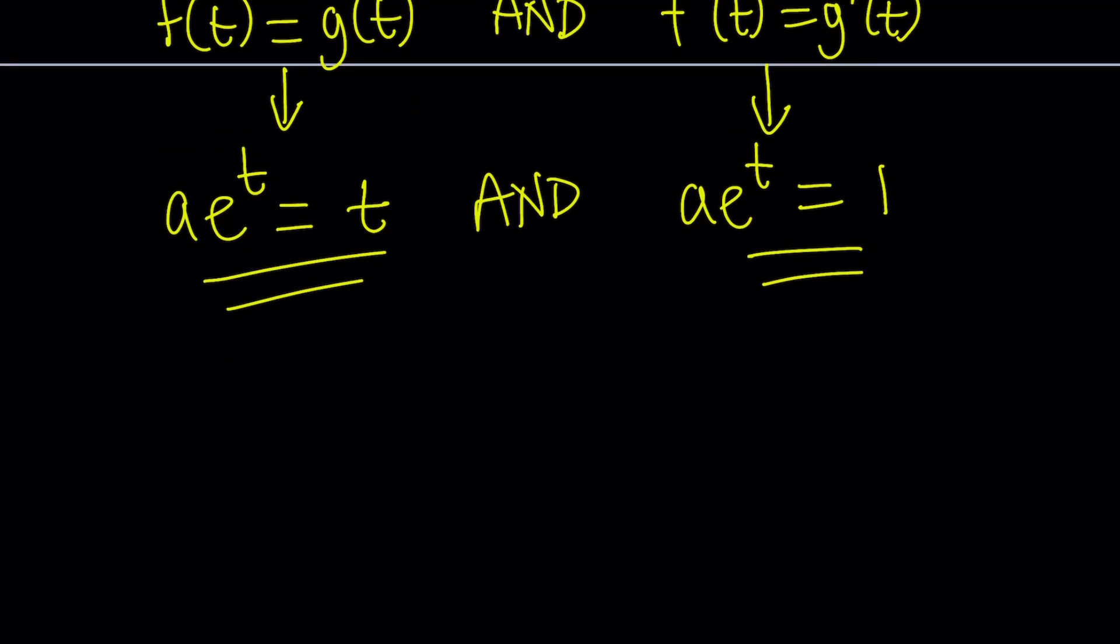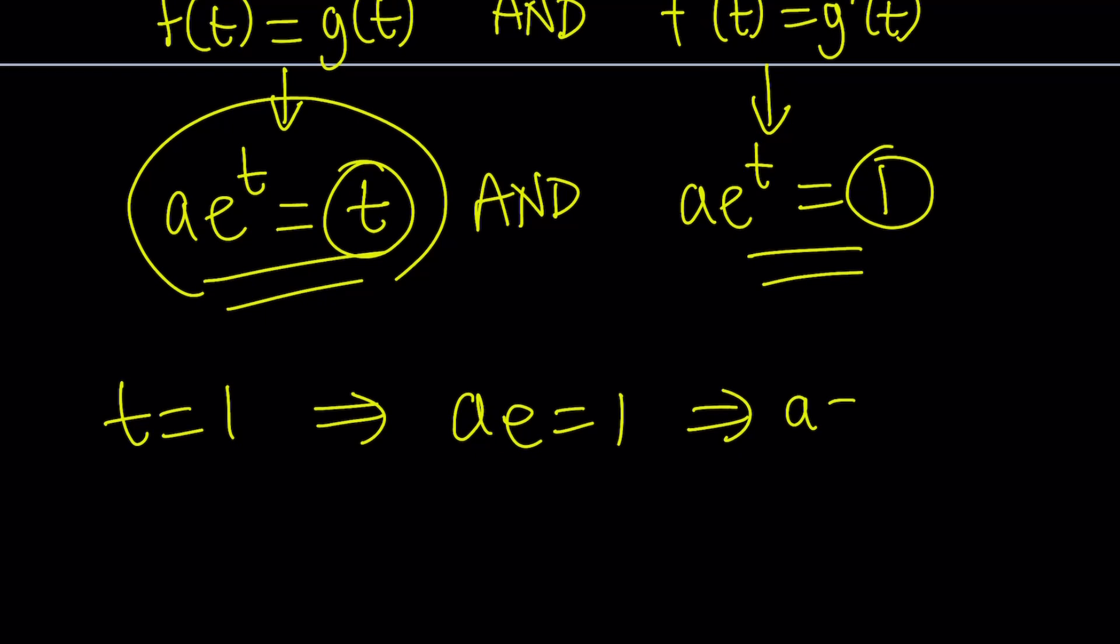And since we have the same thing on the left hand side, if two things are equal to the same thing, then they're equal. So from here, we can safely say that t equals one. And if you plug that into the first equation, we get a e equals one. From here, we get a equals one over e. So a equals one over e gives us the case where these graphs are tangent.